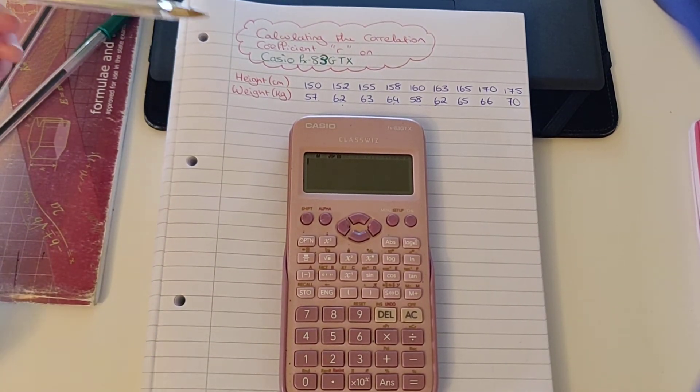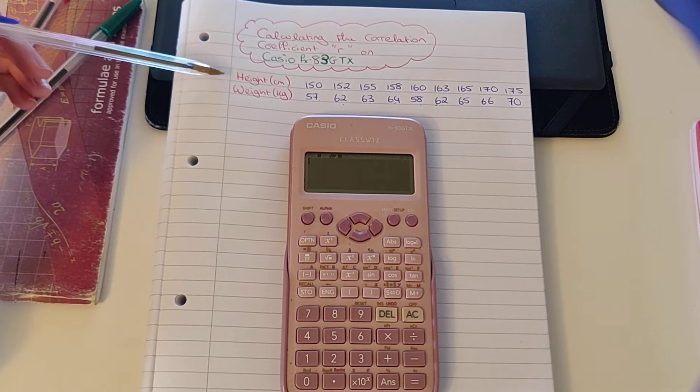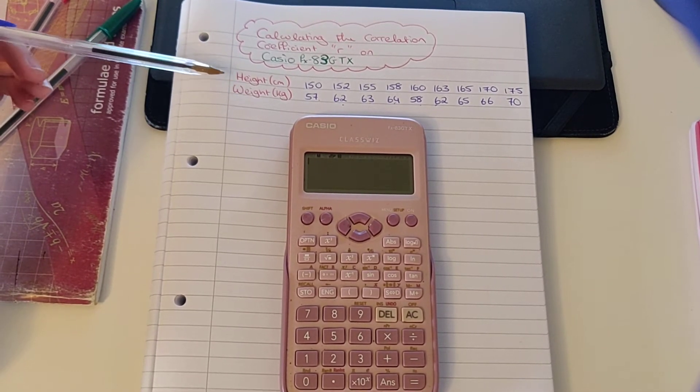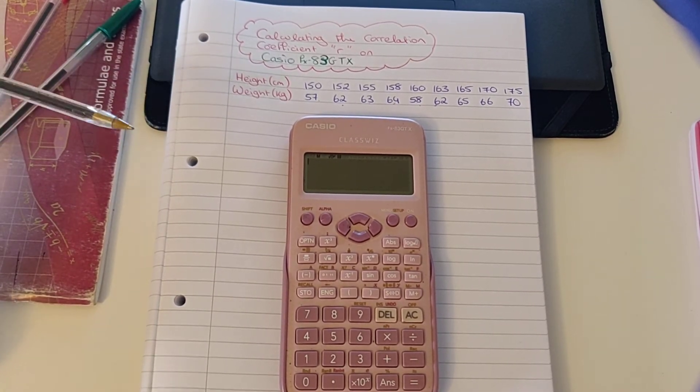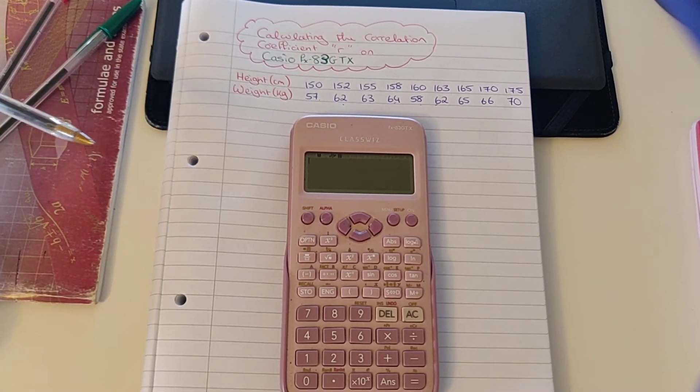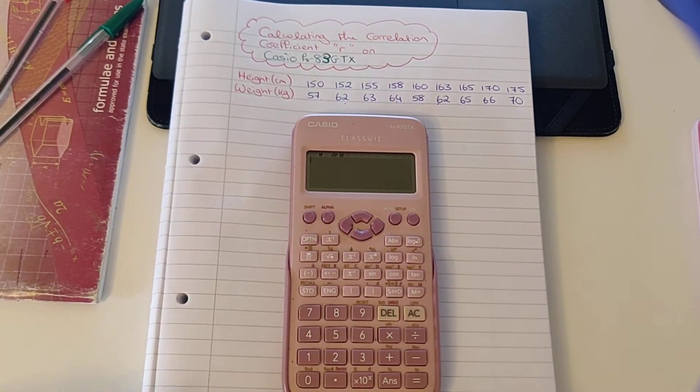So you can see that we have bivariant data here. We have two different pieces of data that we presume to have a relationship with each other, the height and weight of 10 persons. So now to calculate the correlation coefficient, to see the relationship between this data, we need to use our calculator.